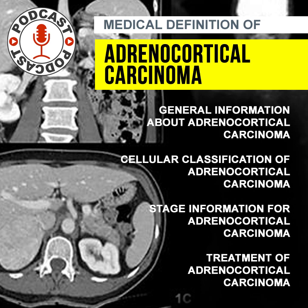Approximately 60% of ACCs produce hormones. The associated clinical syndromes include hypercortisolism, Cushing syndrome, hirsutism, virilization, feminization, precocious puberty, and hyperaldosteronism.